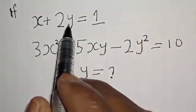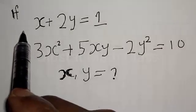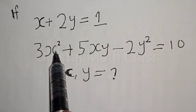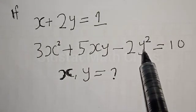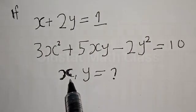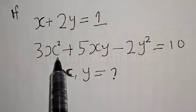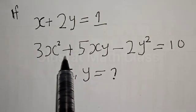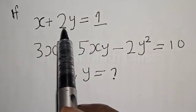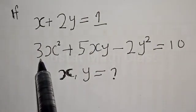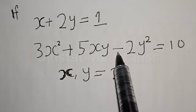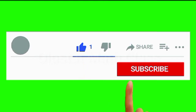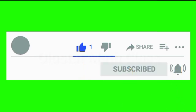If s plus 2y is equal to 1, and 3s squared plus 5sy minus 2y squared is equal to 10, what is the value of s and y? Hi everyone, welcome to my class. In this class we want to look at how we can quickly find the value of s and y from these given equations.